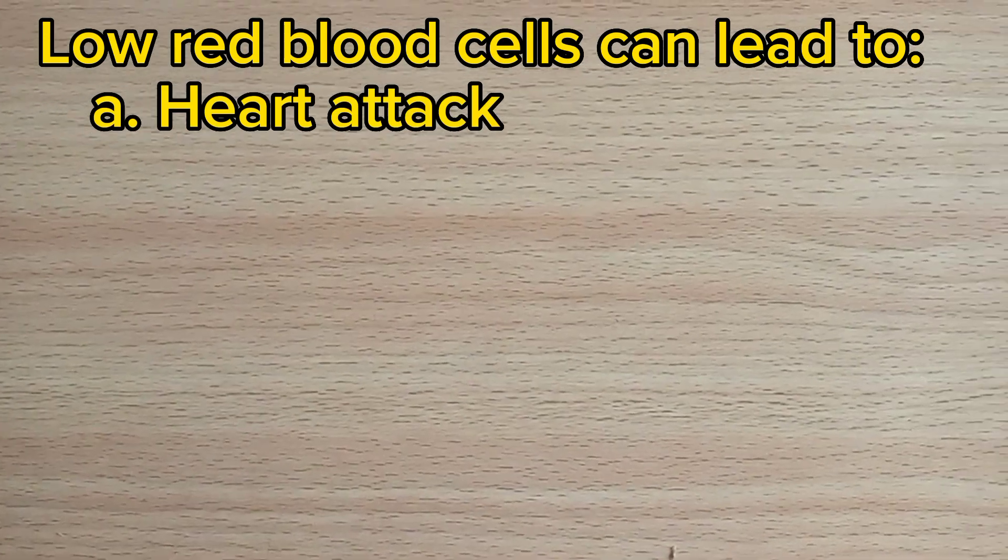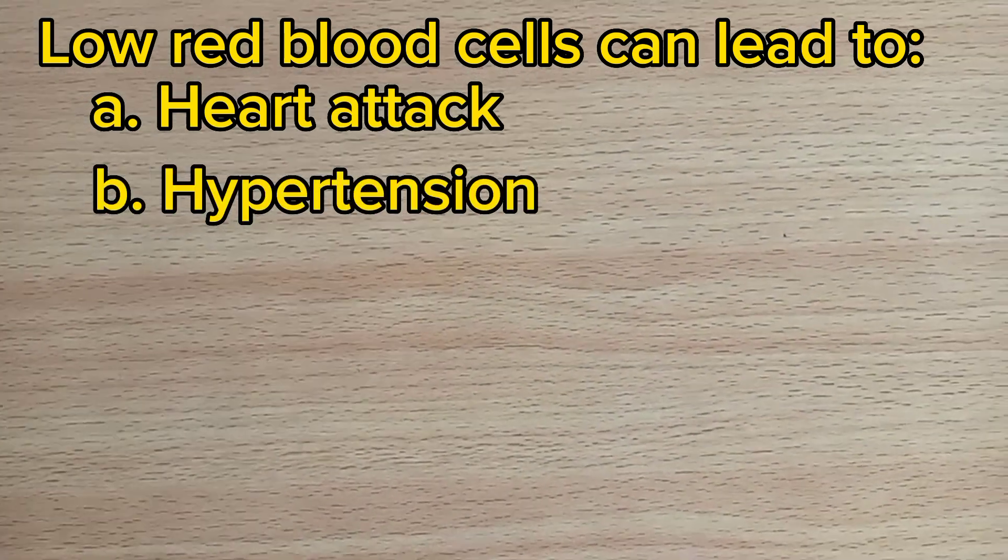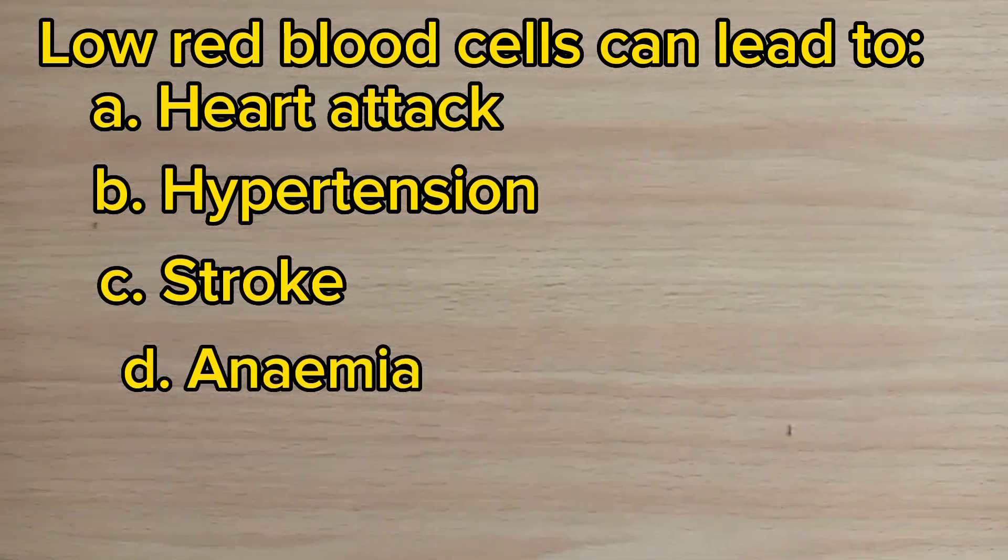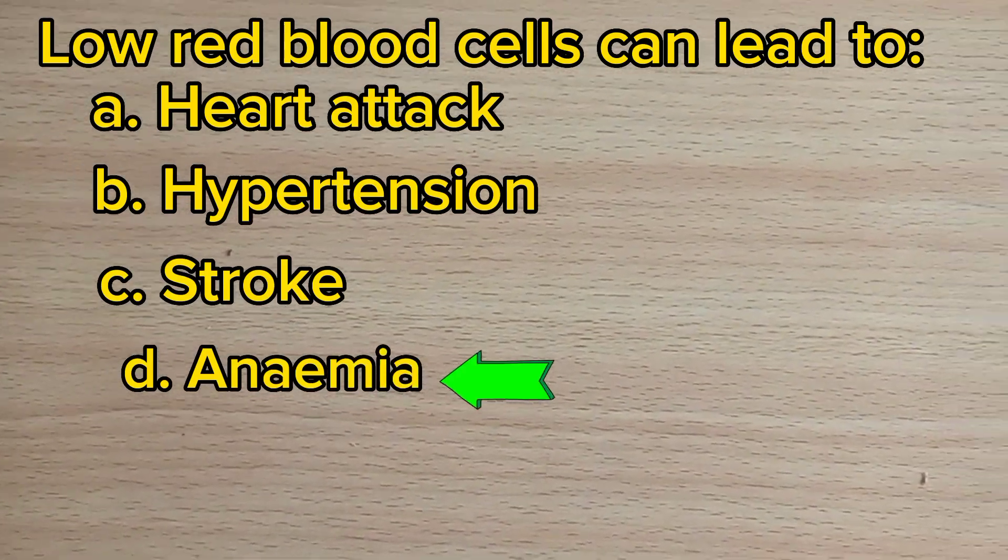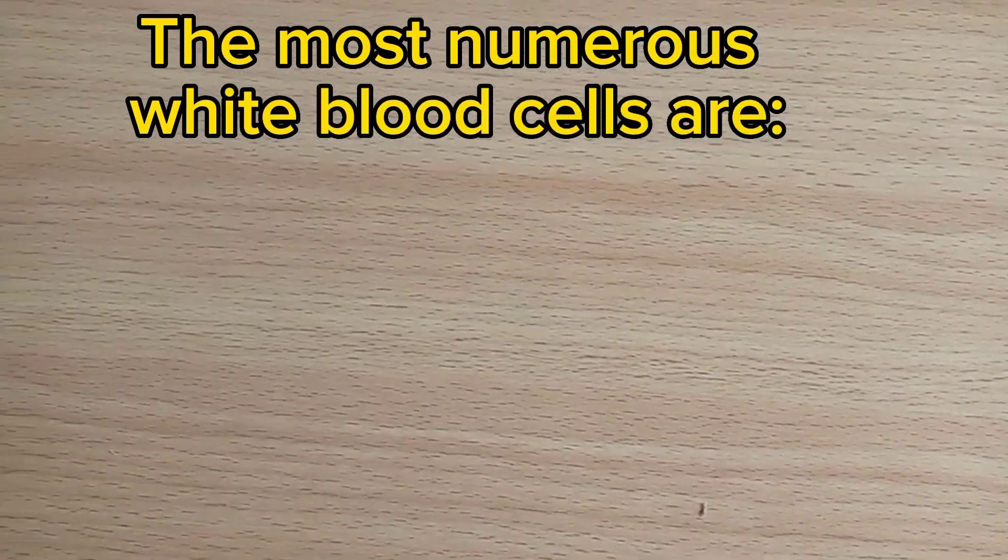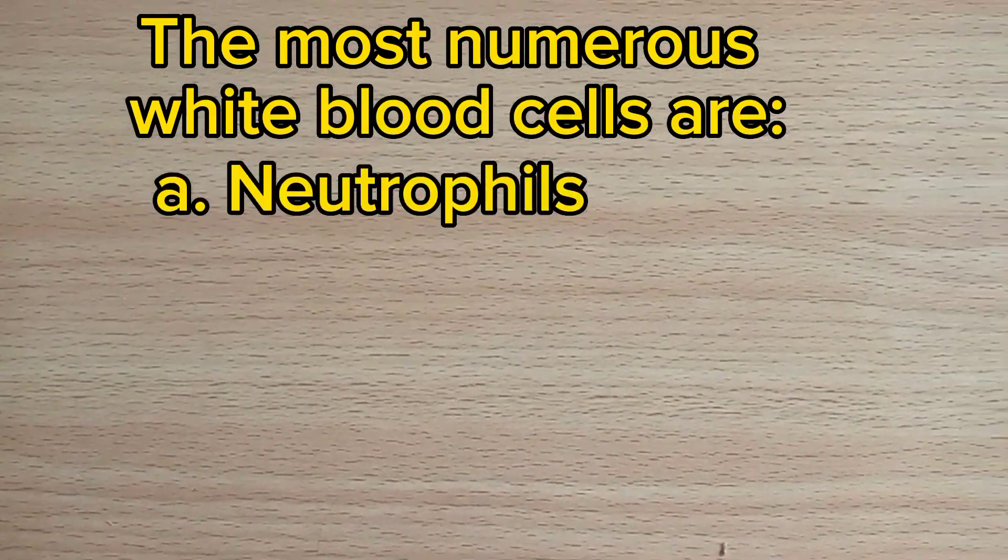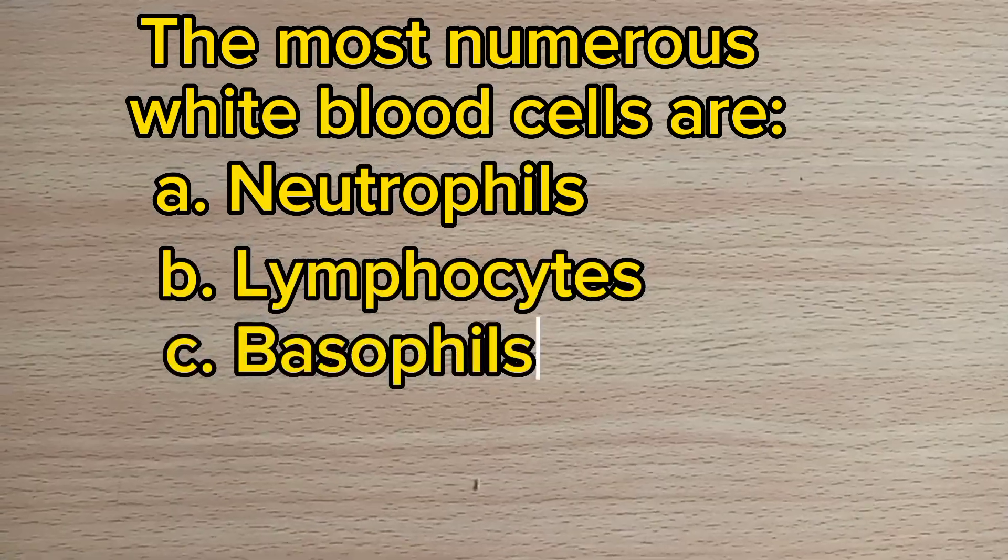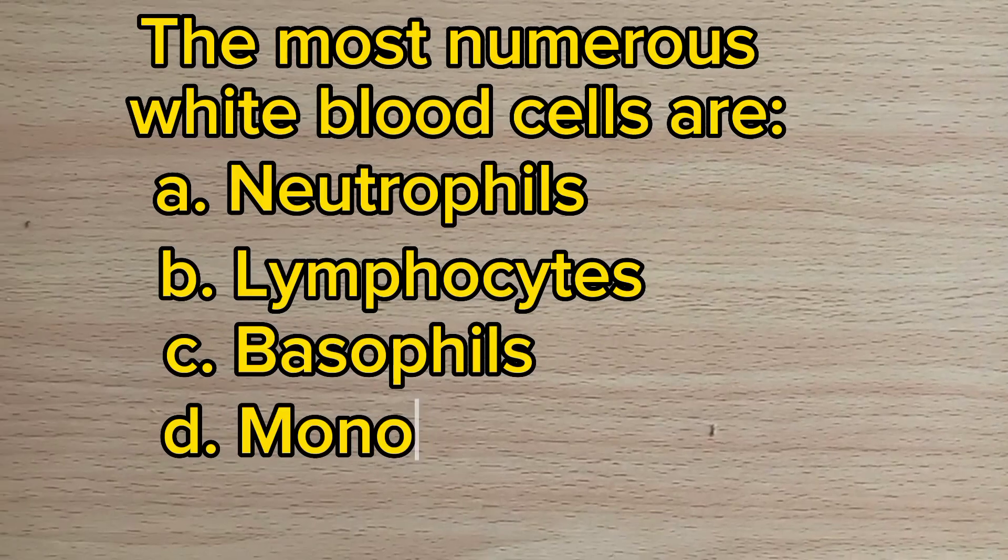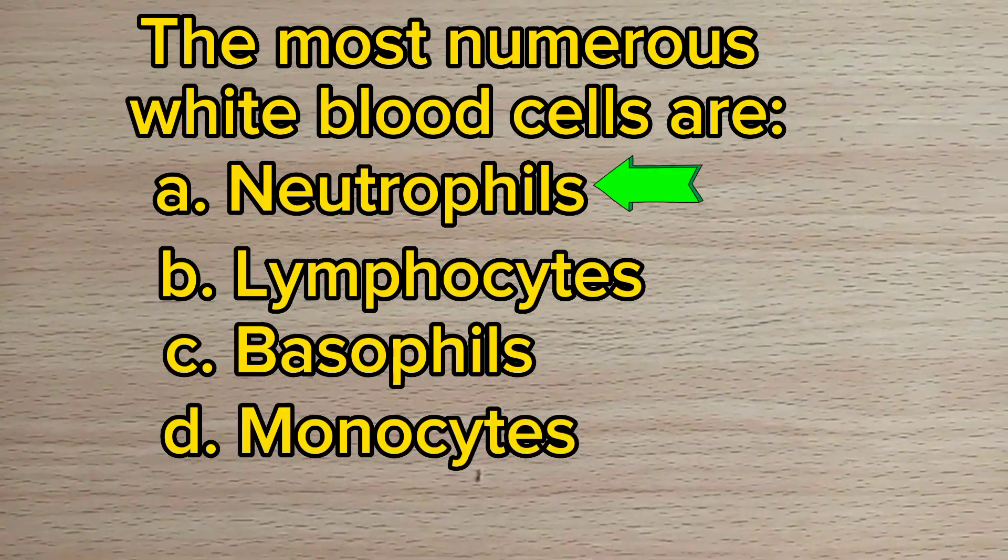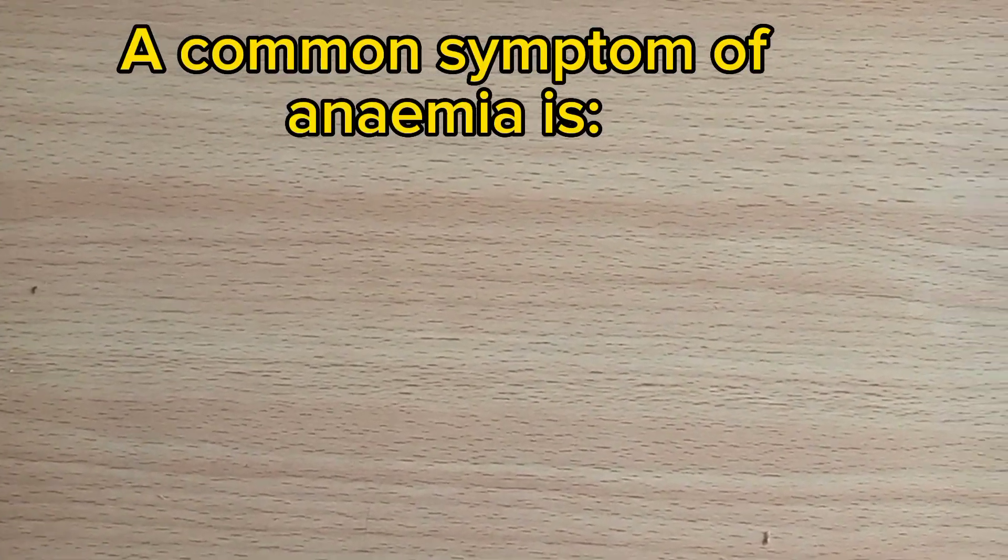Number fourteen: Low red blood cell counts can lead to: A. Heart attack, B. Hypertension, C. Stroke, D. Anemia. The answer is D, anemia. Number fifteen: The most numerous white blood cells are: A. Neutrophils, B. Lymphocytes,